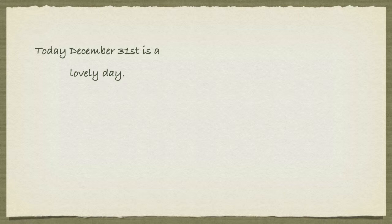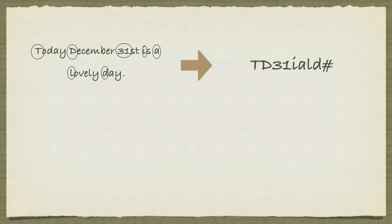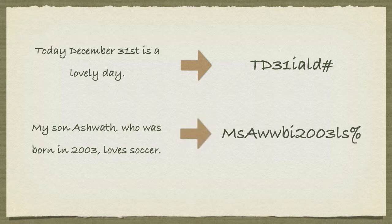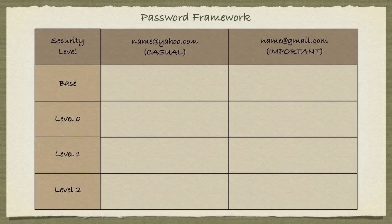I'll use the sentence 'Today December 31st is a lovely day,' taking the first letter of each word to get a base password, replacing the period with a hash symbol. I'll also use the sentence 'My son Ashwat, who was born in 2003, loves soccer' to yield a second base password, using a percentage sign for the period. We'll use these base passwords for the casual and important sites.